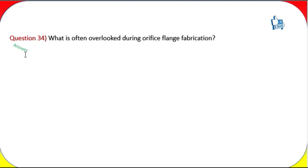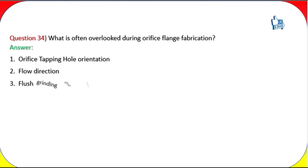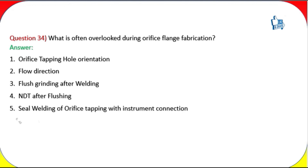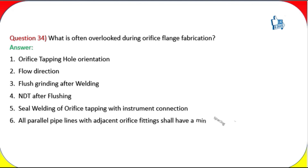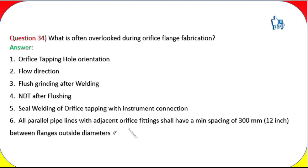Question 34: What is often overlooked during orifice flange fabrication? Answer: Orifice tapping hole orientation, flow direction, flush grinding after welding, NDT after flushing, and seal welding of orifice tapping with instrument connection. All parallel pipelines with adjacent orifice fittings shall have a minimum spacing of 300 mm (12 inches) between flange outside diameters if horizontal taps are required.